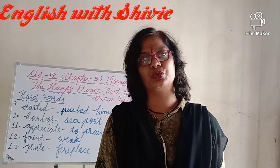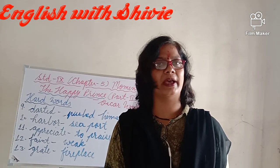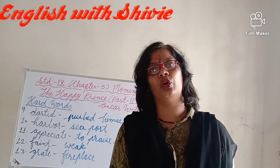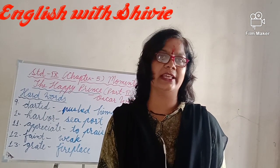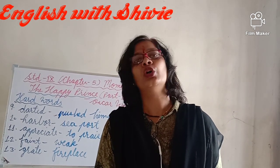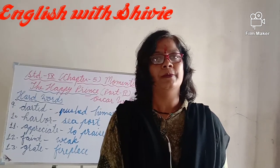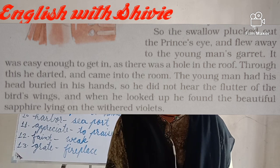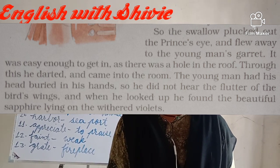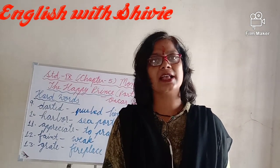'Dear prince,' said the swallow, 'I cannot do that.' But the prince said: 'Swallow, swallow, little swallow, do as I command.' The swallow had too much sympathy, knowing that plucking the eye would leave the prince unable to see. But the prince, deeply moved and wanting to help the playwright, ordered the swallow to pluck out the sapphire. So the swallow plucked out the prince's eye and flew away to the young man's garret.